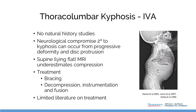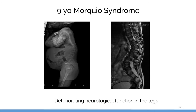The thoracolumbar kyphosis can look quite significant but be completely asymptomatic and non-progressive, so most of the time it doesn't need to be treated. But here's a boy I just saw recently with significant kyphosis now resulting in cord compression with myelomalacia — this is something I need to fix when I get back.